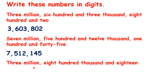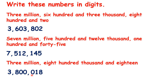Now, this last one is a little more confusing, but we follow the same steps. We have three million, so that's three, and then our first comma. Then we have eight hundred thousand, so eight hundred comma. And then, for the rest of our number, we just have 18, so we need to write zero 18, to show that we don't have any hundreds.